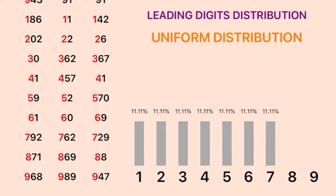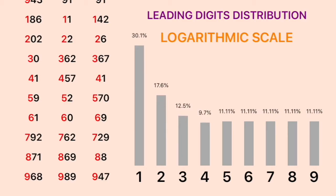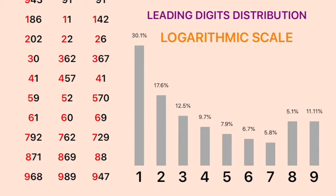But in the real world, such data sets usually have many more numbers with one as the leading digit, often going up to 30%. For each of the nine leading digits from one to nine, the probability occurs on a logarithmic scale.